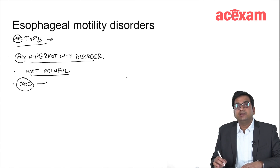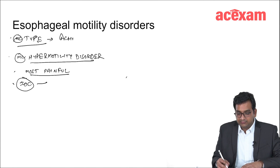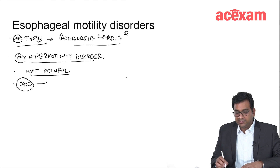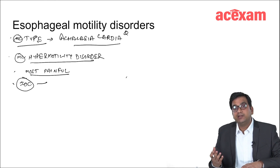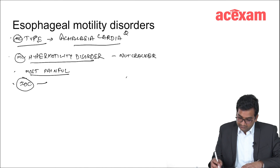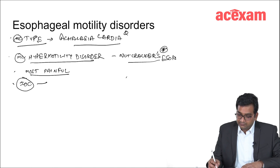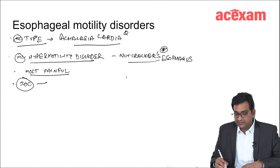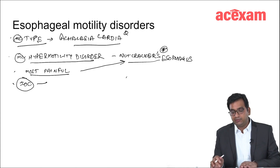The most common type of esophageal motility disorder is achalasia cardia. But in achalasia cardia there is hypomotility of the esophagus, so what is the most common hypermotility disorder? It is nutcracker esophagus. This nutcracker esophagus is also the most painful motility disorder.